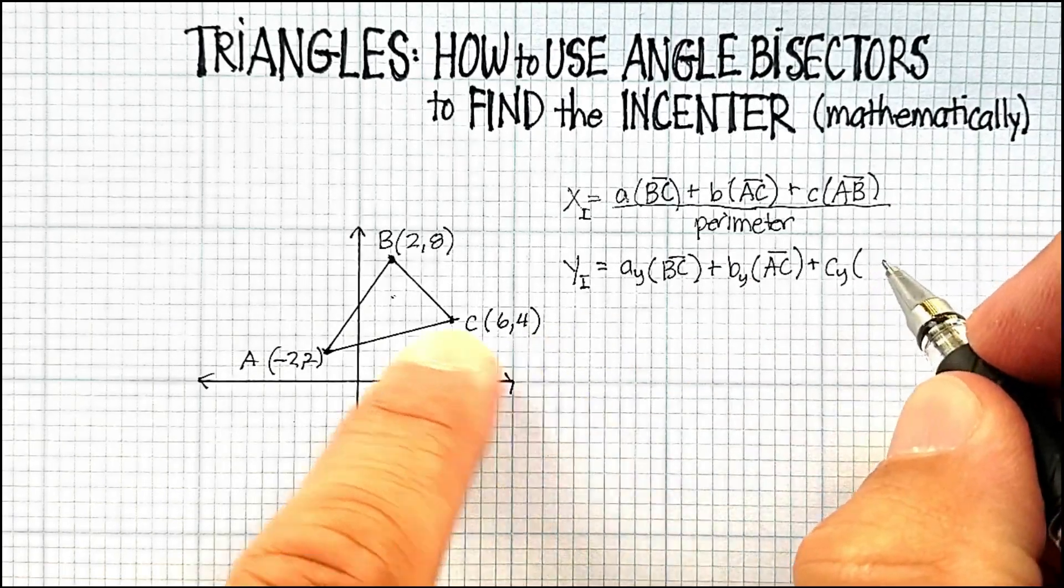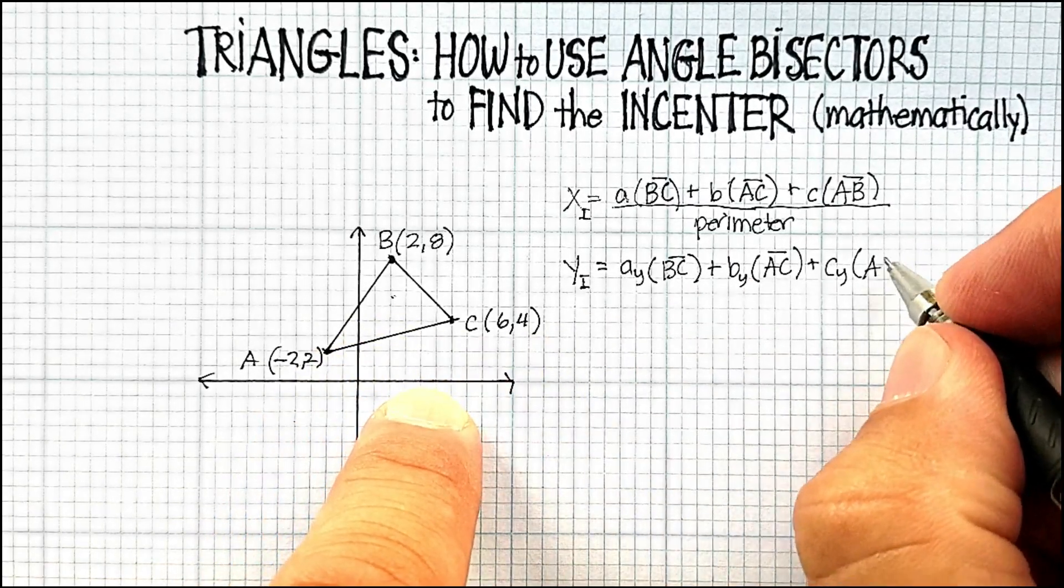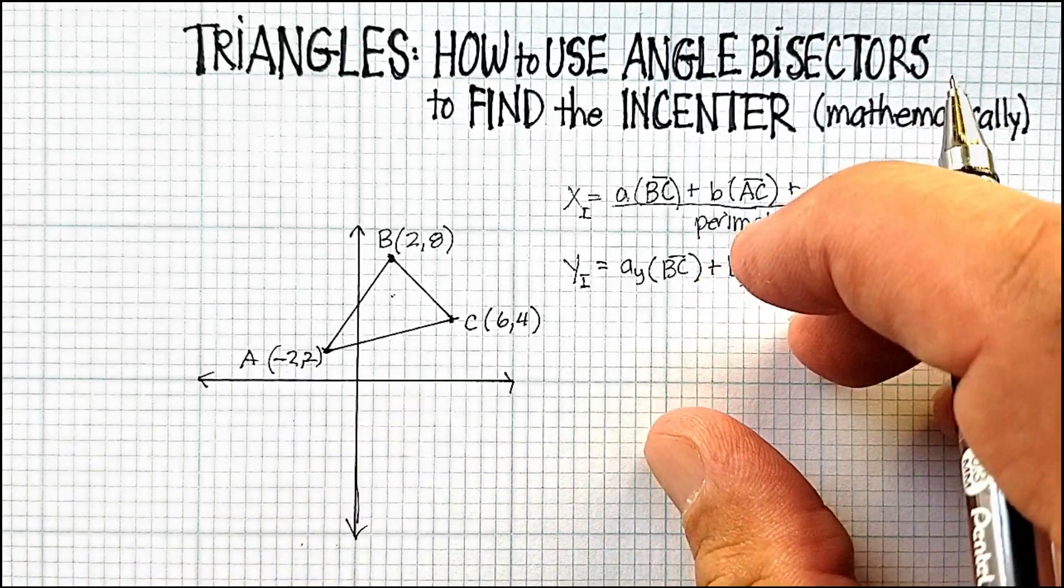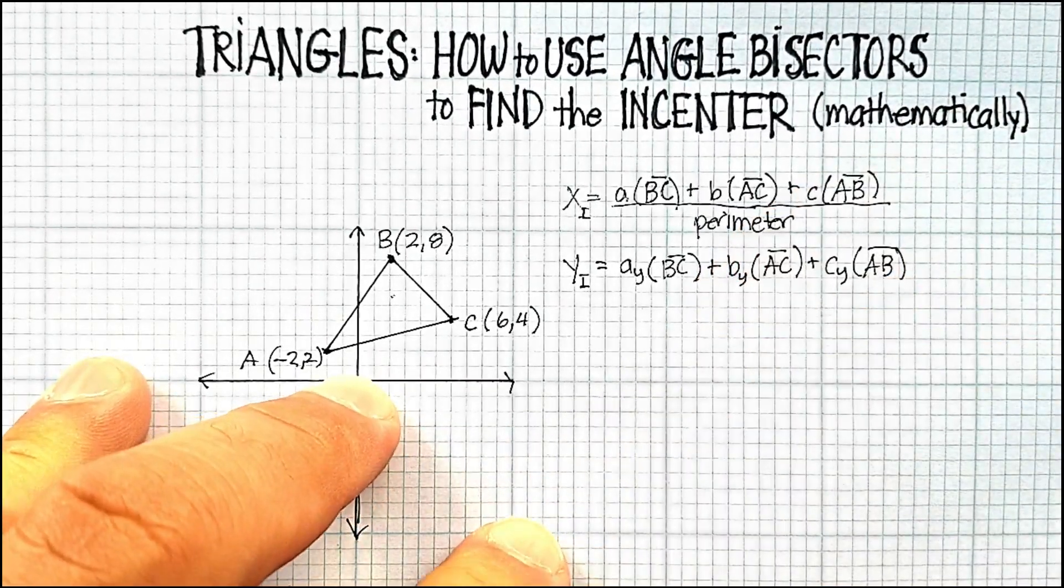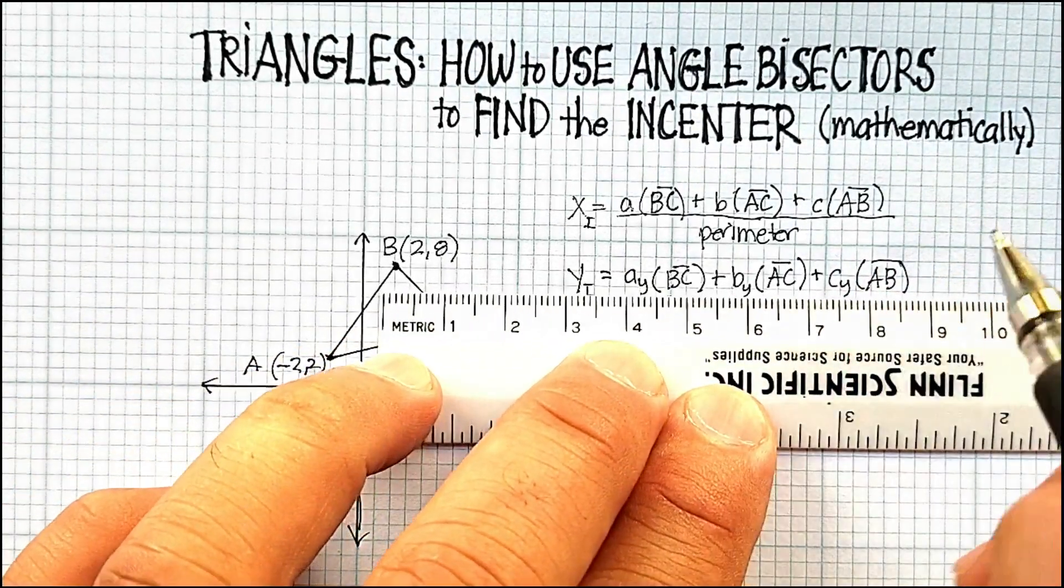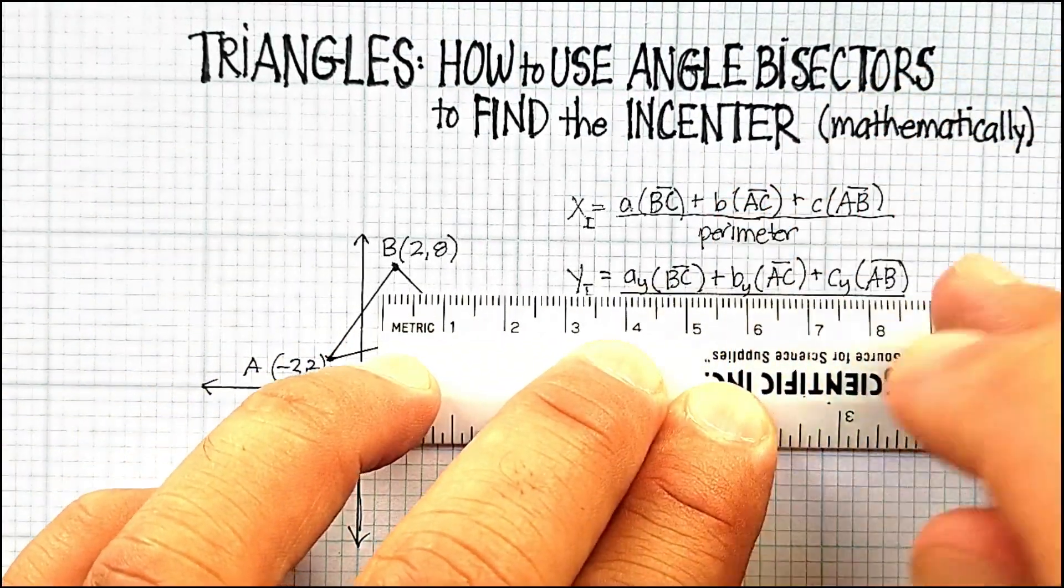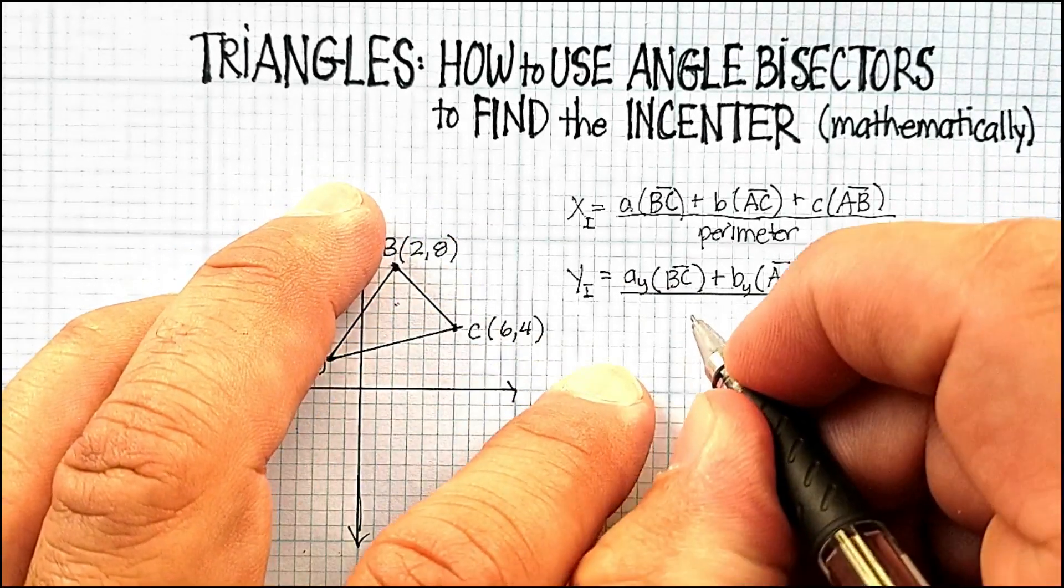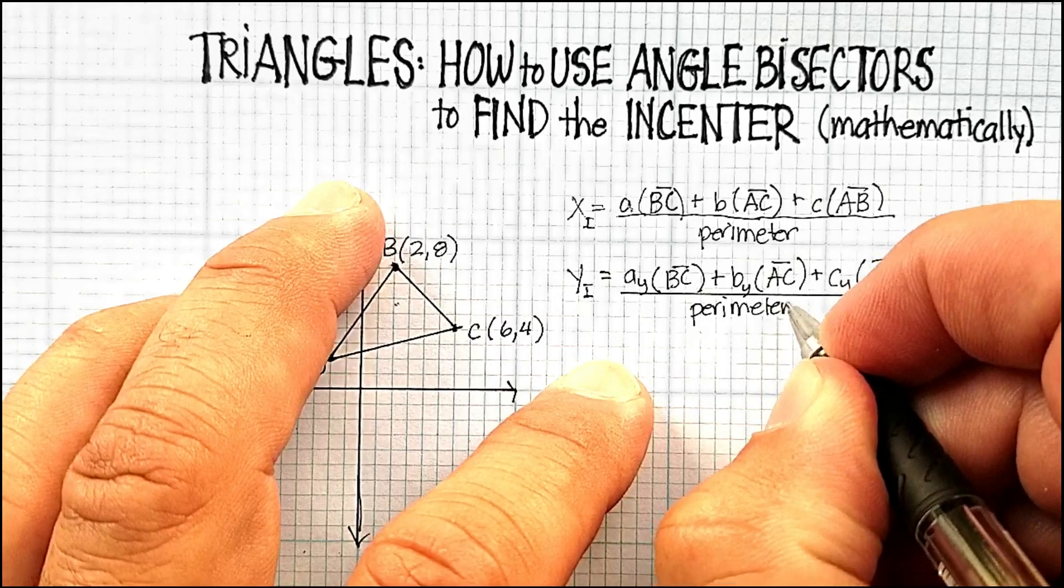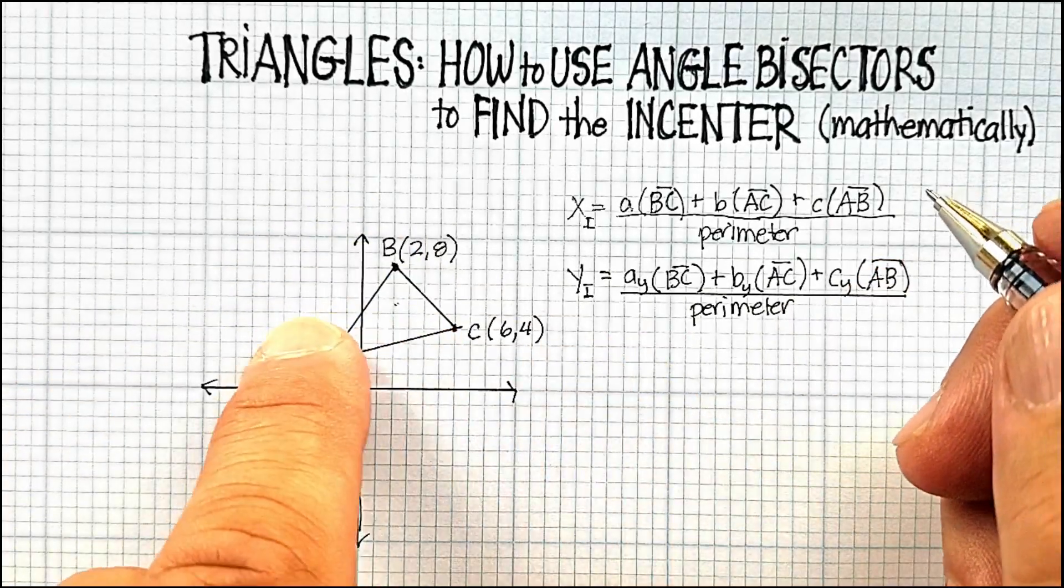And again, divided by the perimeter. Let me just do this, get a better line this way. By the perimeter. And that basically is the formula to find the incenter.